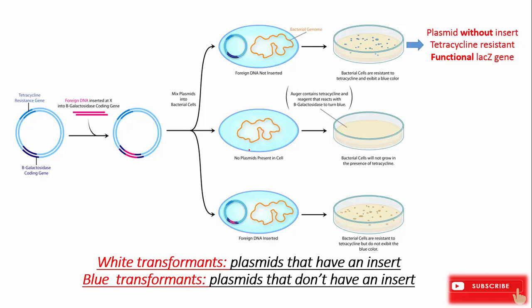In case two, the plasmid is not transformed into bacterial cells. After growing on an agar plate, bacterial colonies will die because of tetracycline — they are not tetracycline resistant and have a non-functional lacZ gene with no plasmid present.